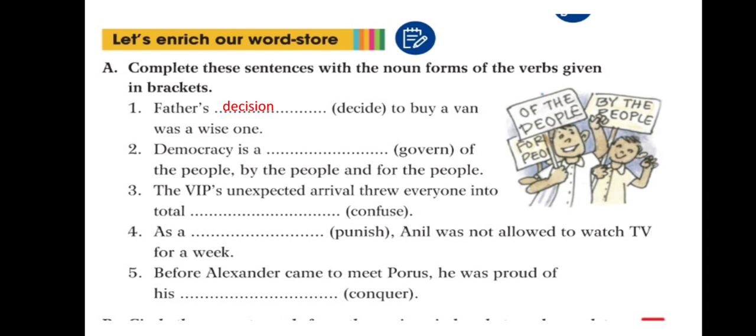Now, democracy is a government of the people, by the people and for the people. Is a government. So, we added M-E-N-T in this. Government. Democracy is a government of the people, by the people and for the people. We have added M-E-N-T in this.